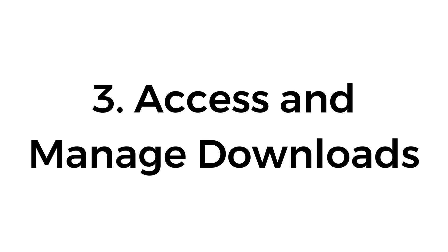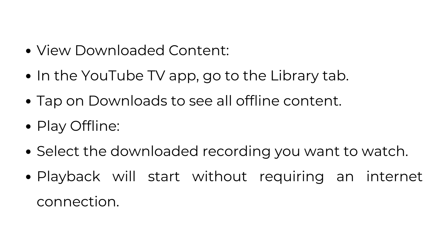Number three, access and manage downloads. In the YouTube TV app, go to the Library tab and tap on Downloads to see all offline content. Select the downloaded recording you want to watch, and playback will start without requiring an internet connection.